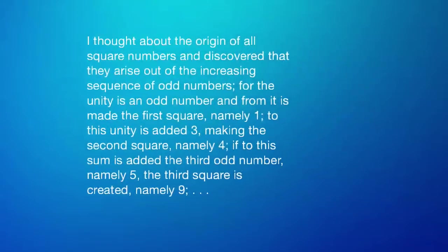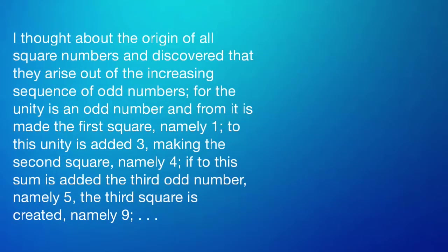I thought about the origin of all square numbers and discovered that they arise out of the increasing sequence of odd numbers. For the unity is an odd number, and from it is made the first square, namely 1.